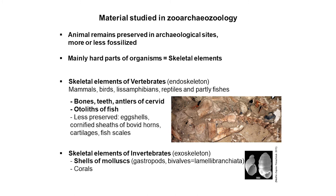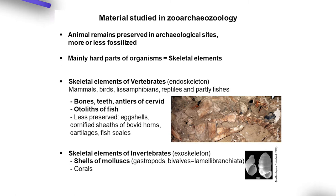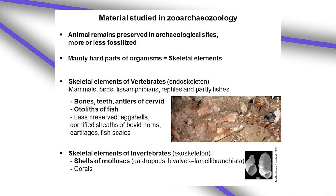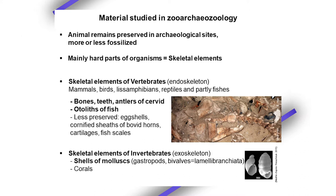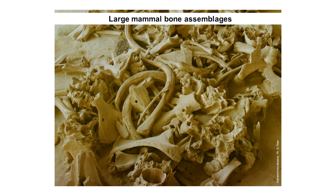Invertebrates are also found in fossil material — what is called shells, especially of mollusks, which are found in Paleolithic sites and can be very important in terms of paleoenvironment and subsistence behaviors. Human use of mollusk shells is also relevant, but I will focus on vertebrates and especially large mammals.